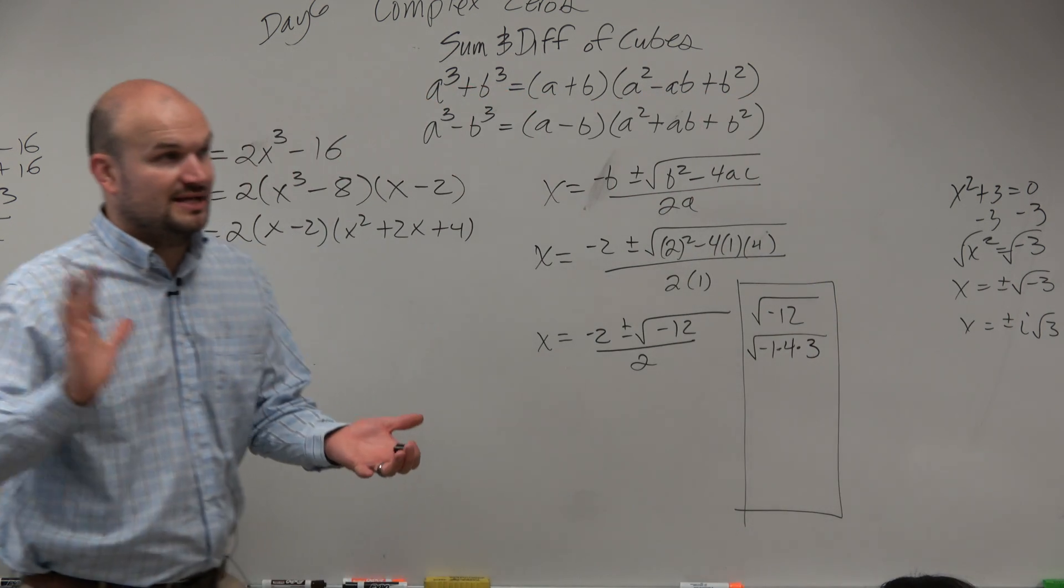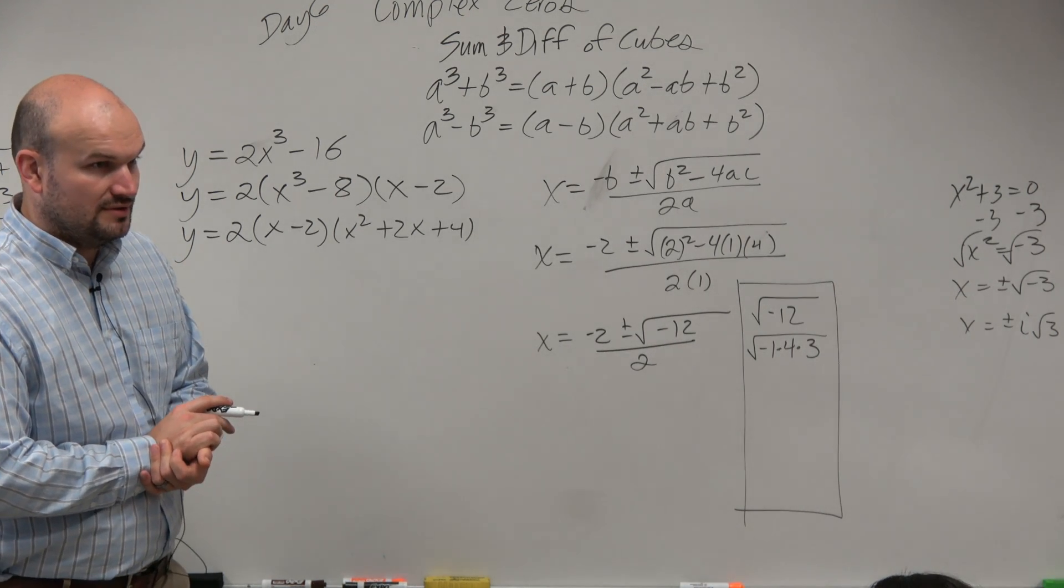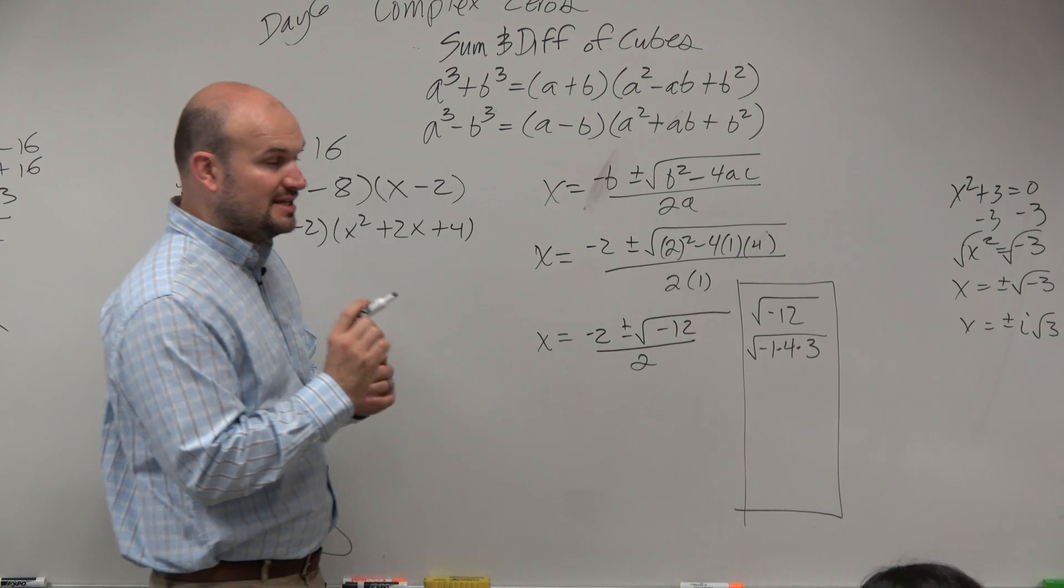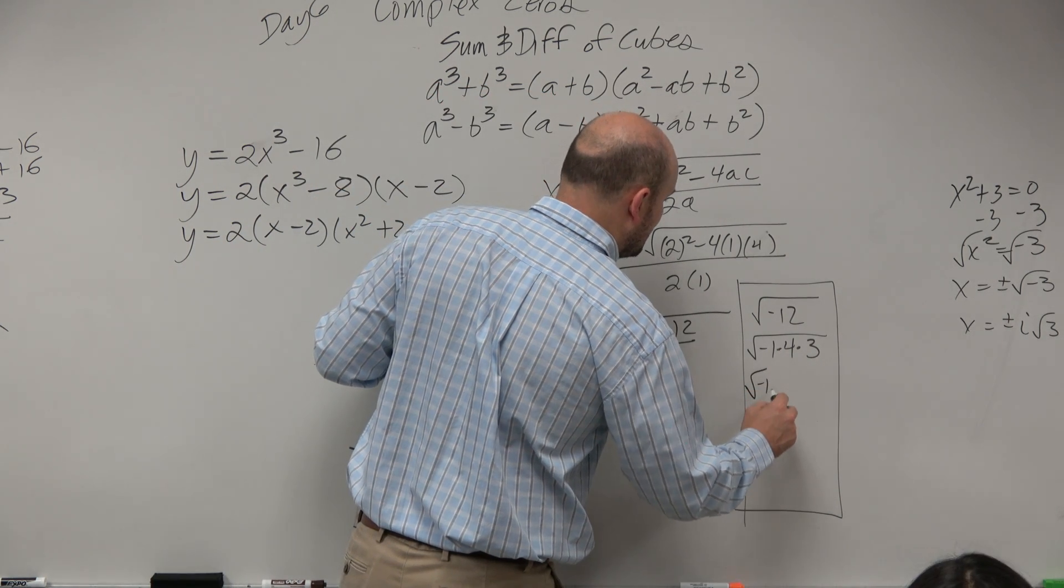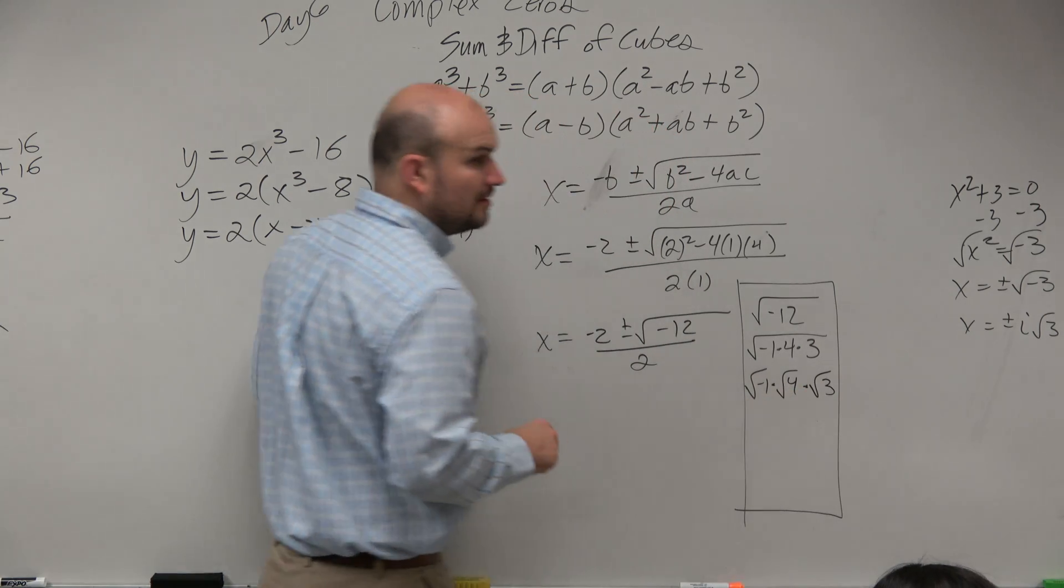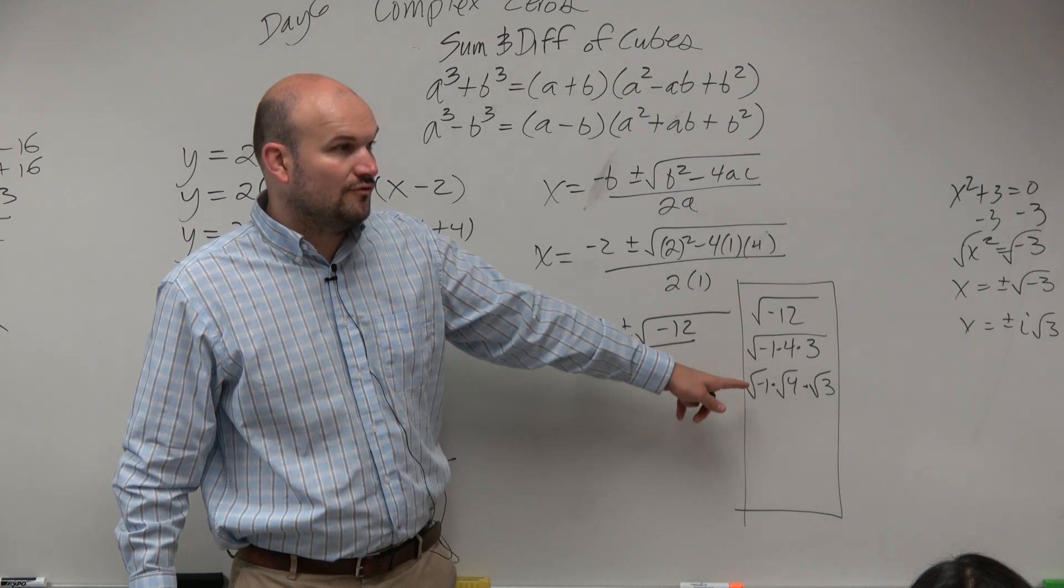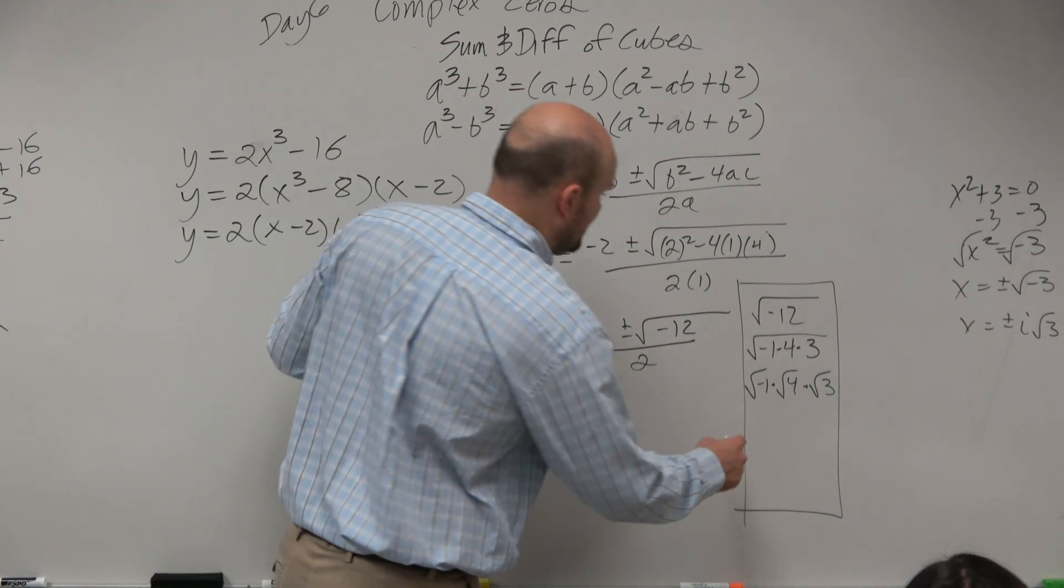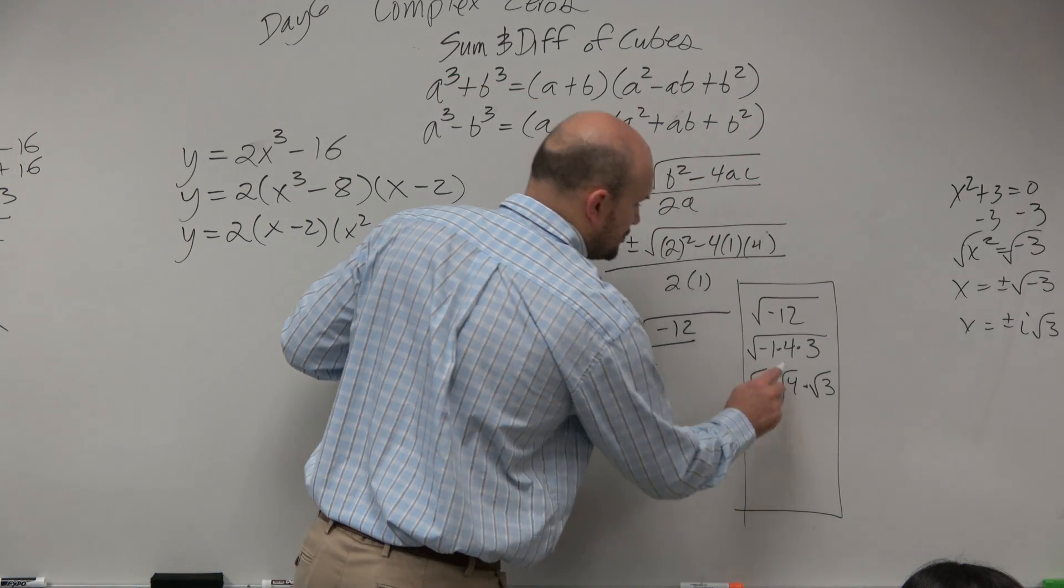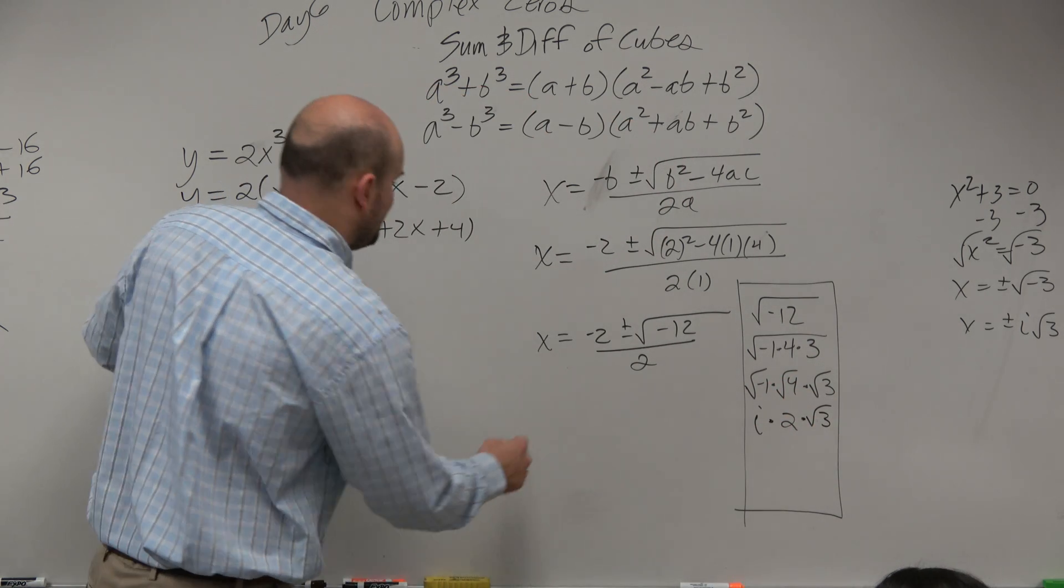Would everybody agree with me that is exactly equal to negative 12? Yes? But the nice thing is we can break that down now into the square root of negative 1 times the square root of 4 times the square root of 3. What's cool about that is we know that the square root of negative 1 we use to represent our imaginary unit i. Square root of 4 is 2, and then we can't do anything with the square root of 3. So therefore,